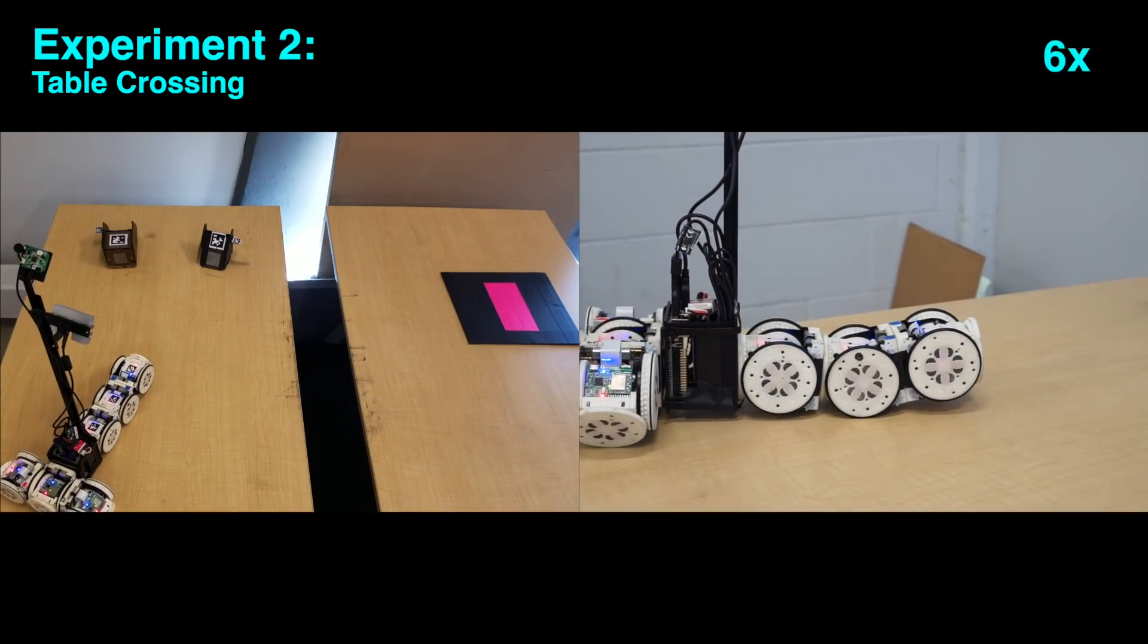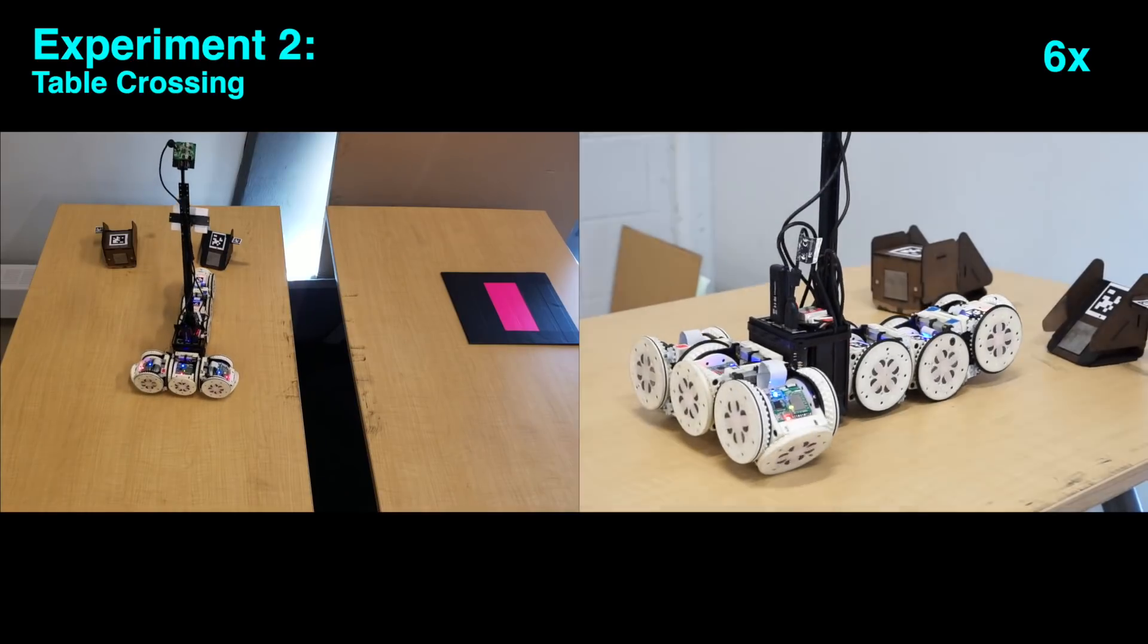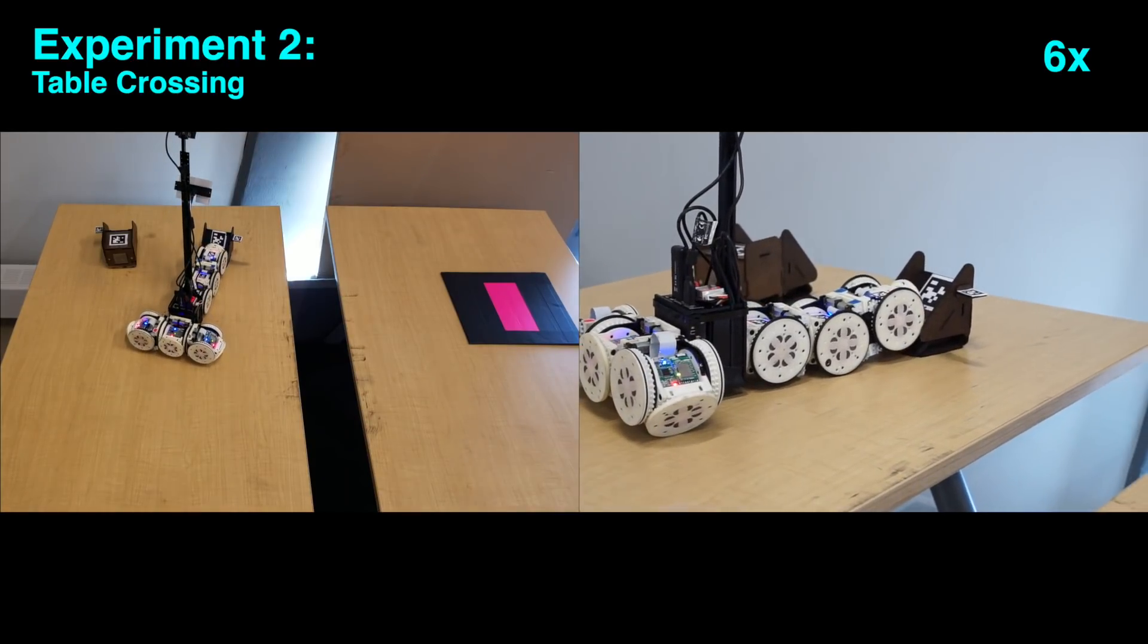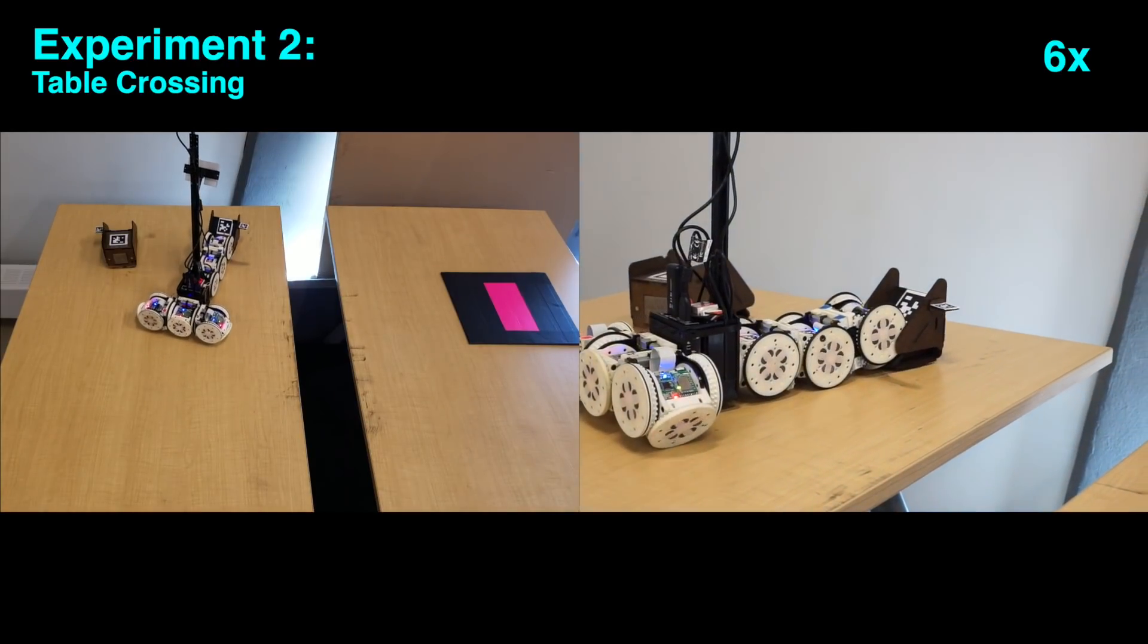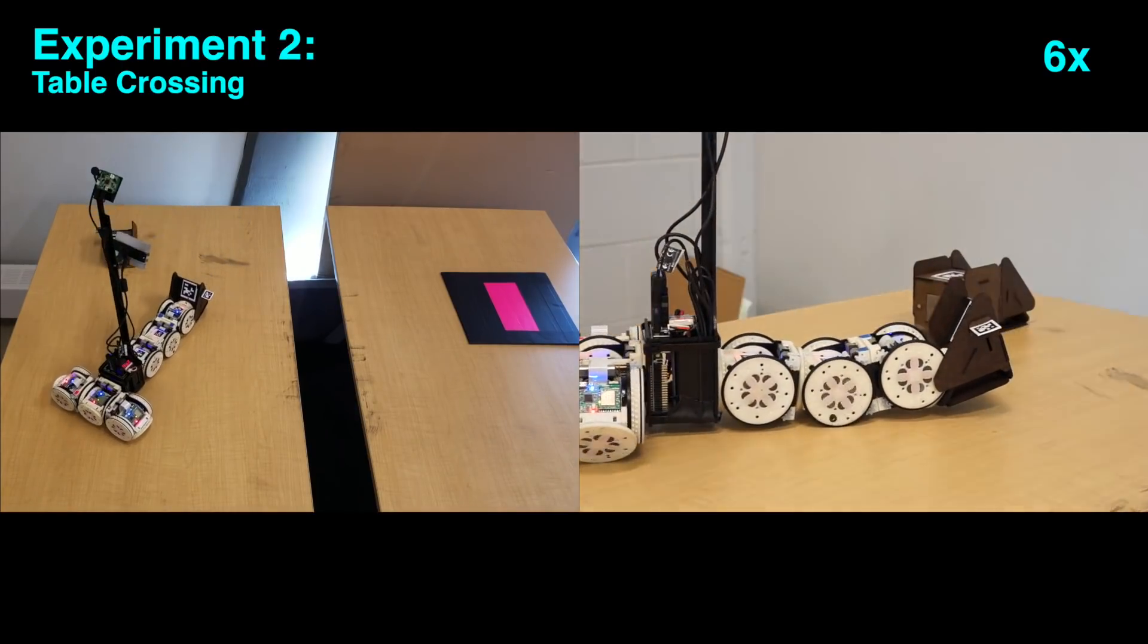Recognizing that it would be unable to cross this gap on its own, the robot searches for materials to augment its environment. It identifies three available augmentation modules nearby and assembles them into a bridge.